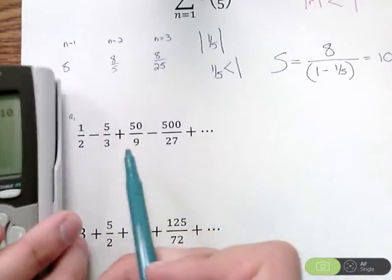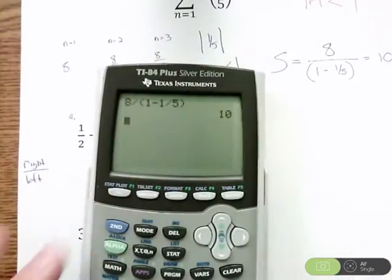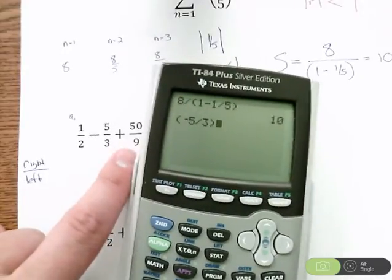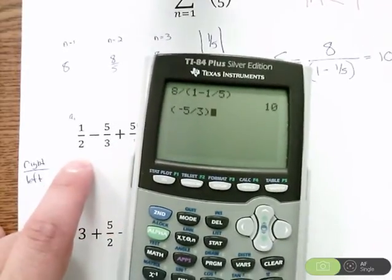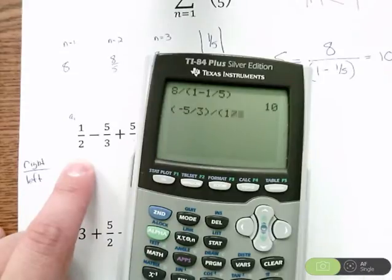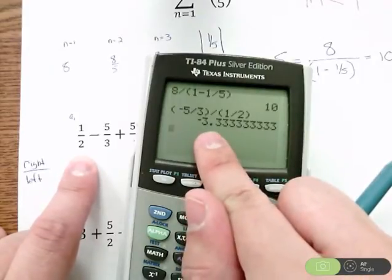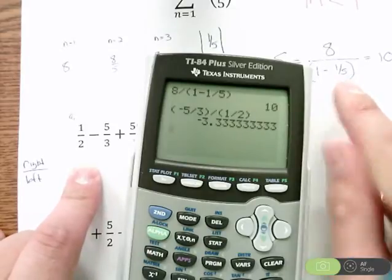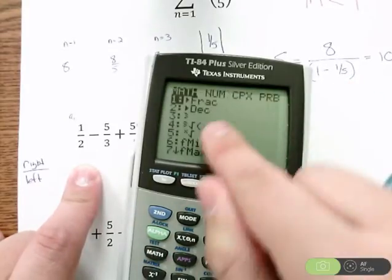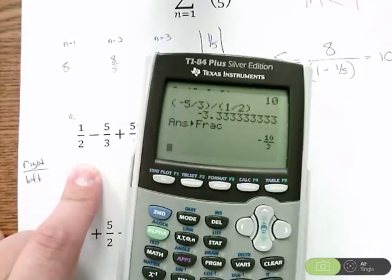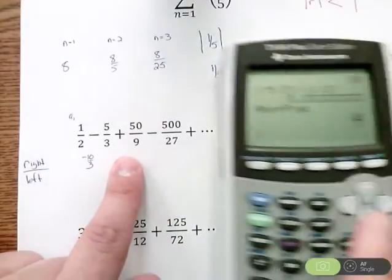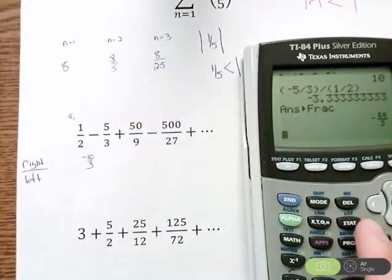In a calculator, I take negative 5/3 - parentheses, negative 5 divided by 3, close parentheses - and divide it by 1/2. Negative 5/3 divided by 1/2, we get negative 3.33. For these types of problems, I want R to be a fraction. So if I have this number and want a fraction, hit math, frac, and I get negative 10/3, which is the same as negative 3.33.